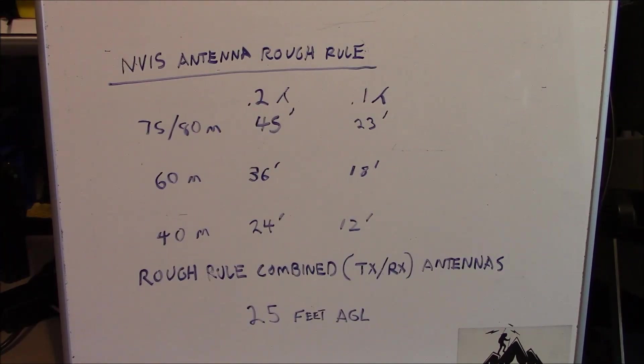Those of you who have watched my channel in the past know that I'm a big fan of a rough rule. A rough rule is just a figure that is an average of all the other numbers that's going to give you an acceptable level of performance. It's something you can pull out of your hat and apply it and have acceptable performance. When we run all the numbers for the antenna heights, you can see them displayed here, and then averaged is around 26 feet above ground level. So 25 feet above ground level and a combined transmit and receive NVIS antenna is going to give you the best of all worlds across those specific frequency bands.